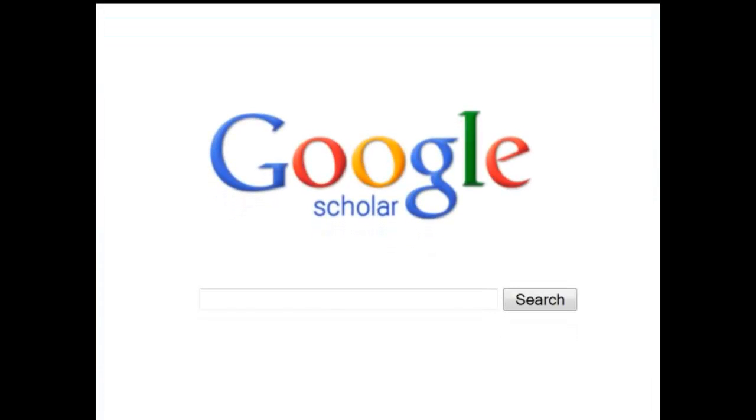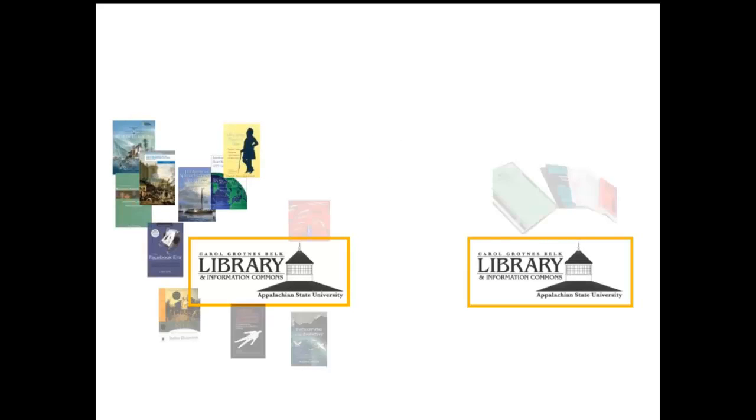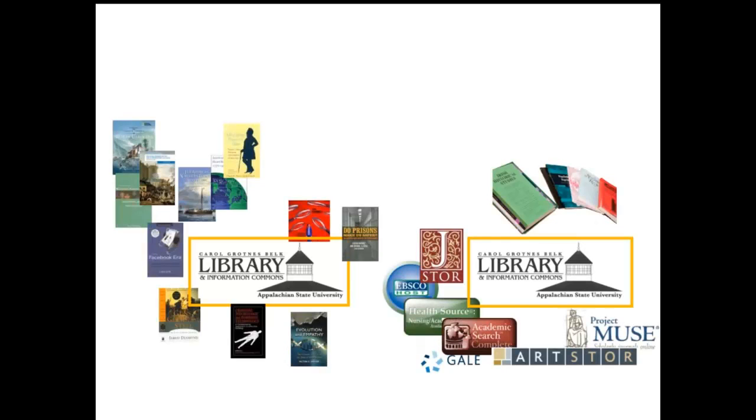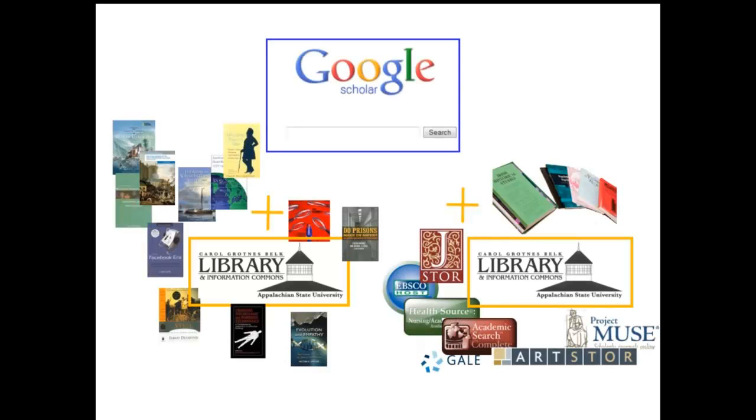Google Scholar locates references to academic journal articles, books, theses, and other scholarly content. But often, only an abstract is available for your results. Fortunately, we can combine Belk Library's large full text book and journal collections with the power of Google Scholar's search engine.